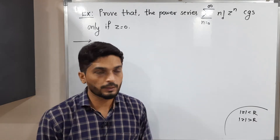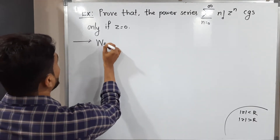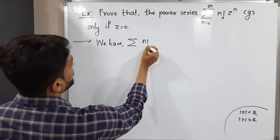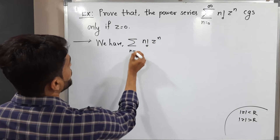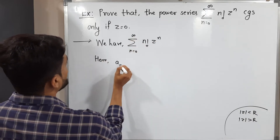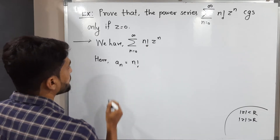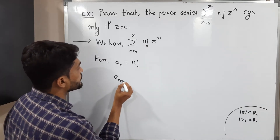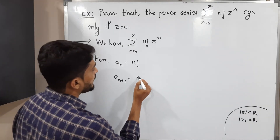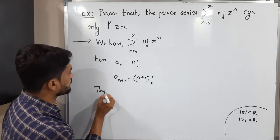The given series is summation of n-factorial times Z raised to n, where n varies from 0 to infinity. So here aₙ — the coefficient of Z raised to n — is n-factorial. And aₙ₊₁ means simply replace n by n+1 everywhere, so we have (n+1)-factorial.